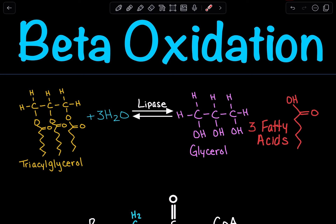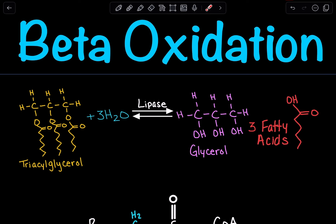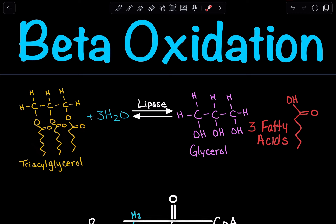We have lipids, also known as fats, and these are made up of both glycerol and fatty acids. Here we have a general structure of what a lipid could look like — a glycerol backbone with fatty acids attached. Here we have three fatty acids, so we refer to it as triacylglycerol.